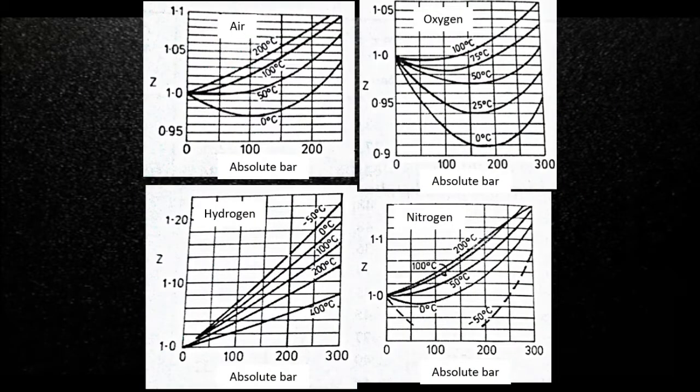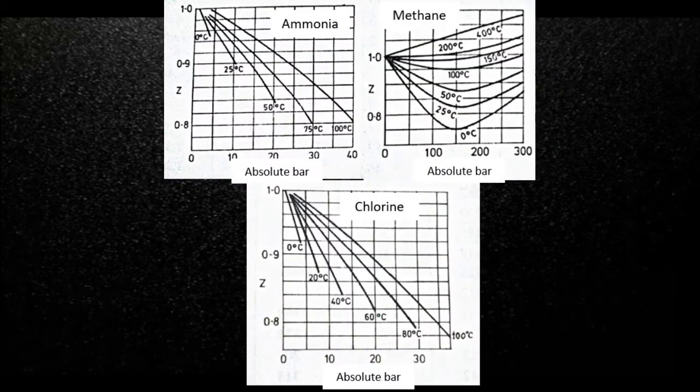The deviations are represented by the compressibility coefficient c which is the relationship between the density considering the ideal gas and the real density. In these graphs, the value of c can be determined directly, this being one way to get it.